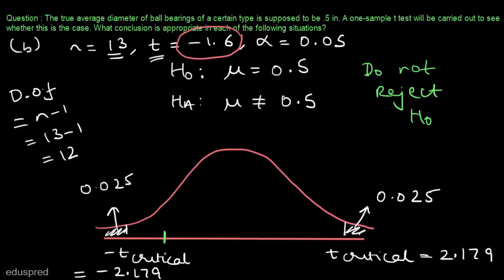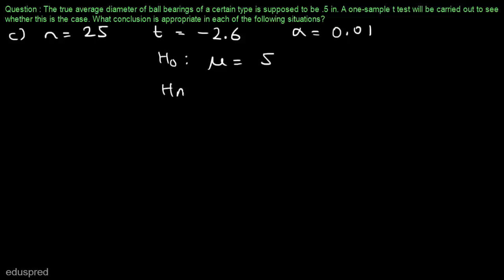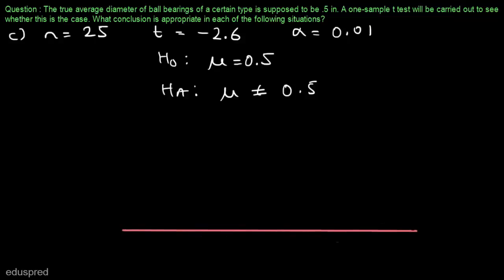Let's move to part C. In part C, we are given that n is equal to 25, t is equal to minus 2.6, and alpha is equal to 0.01. The null hypothesis is the same: mu equal to 0.5, and the alternate hypothesis is mu not equal to 0.5. Once again, we can draw the t-distribution. We are given that n is equal to 25 and alpha is equal to 0.01.